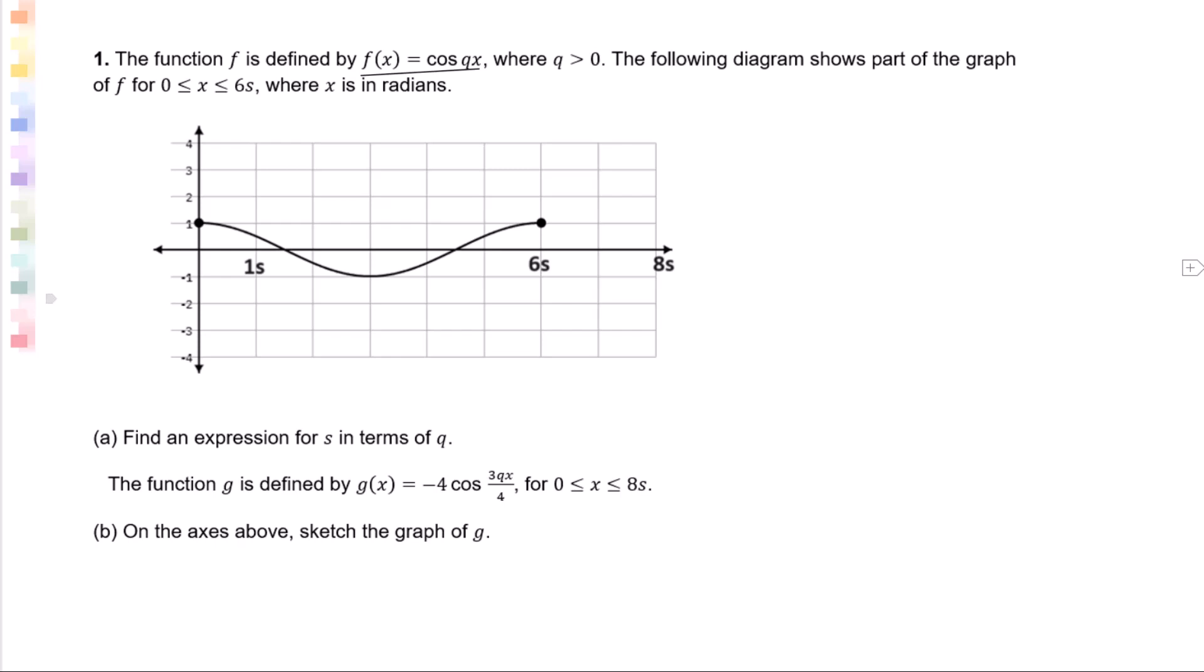Part A: Find an expression for s in terms of q. Let's look at this graph. From the given graph, we know the period equals 6s. For f(x) = cos(qx), the period will be 2π/b, where b is q, which equals 6s.